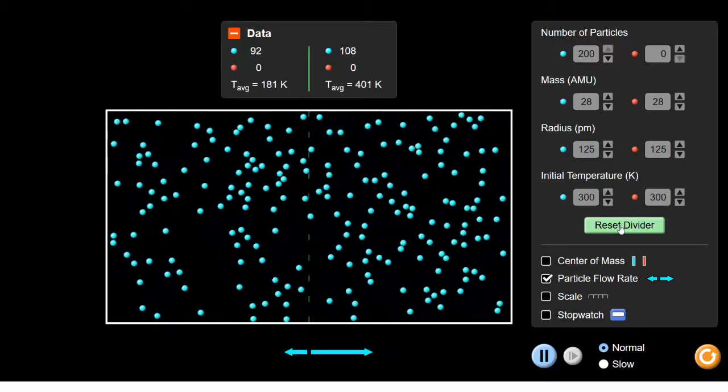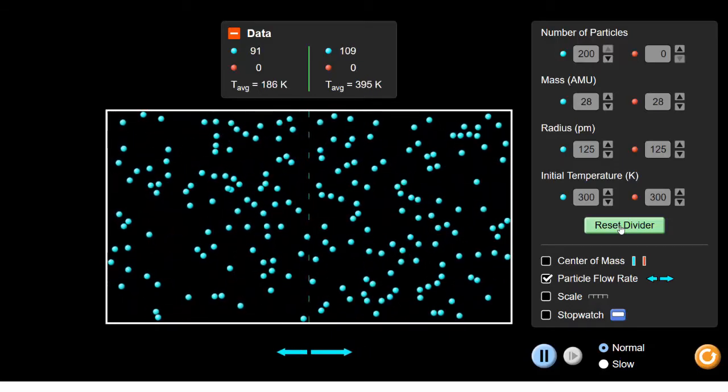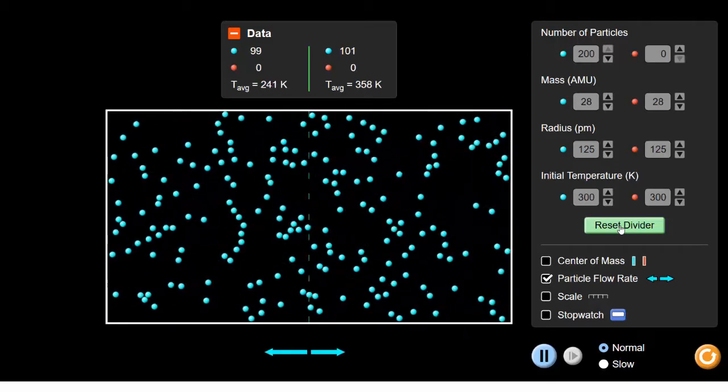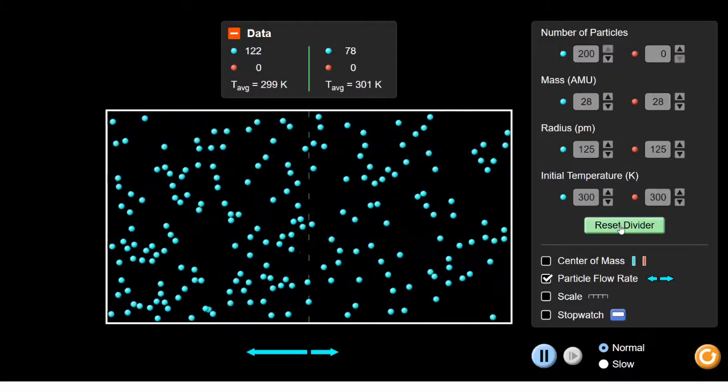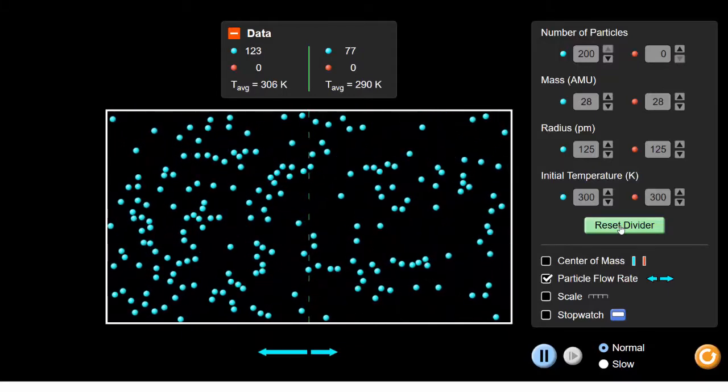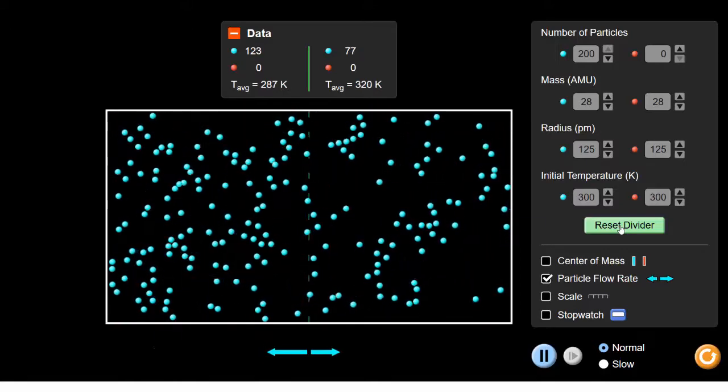After the particles have been diffusing for a while, the number of particles on each side is about equal, which means there's an equal chance of a particle moving from left to right, or from right to left. The arrows are now on average the same.